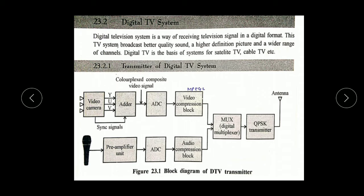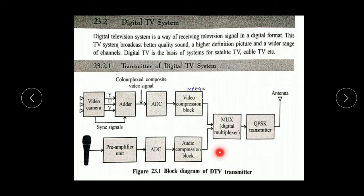Now, transmission of digital TV systems. This is the transmitter for digital TV. We have to record two types of signals: first is the audio signal, and second is the video signal. We record audio from the microphone, then by the pre-amplifier we amplify the signal strength, and then send it to the analog-to-digital converter, which converts the analog signal into digital bit format. We then send it to the audio compressor block, where we reduce the audio bits by the compressor to reduce the bandwidth.